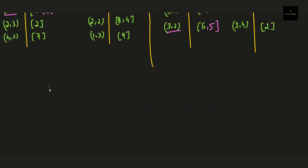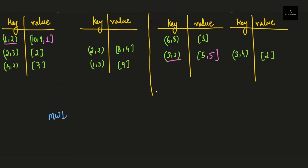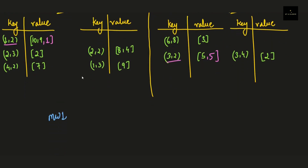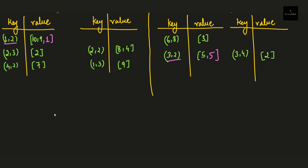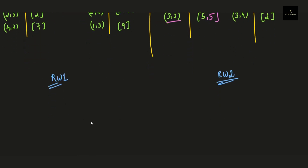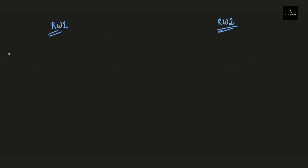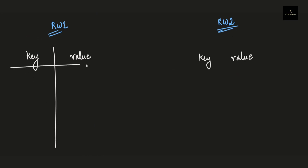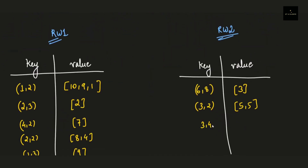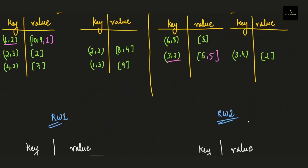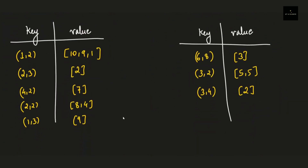In the next step we club the two key-value tables in each map worker into a single key-value table. Note that the swapping task is done with the help of reducer workers — the map workers get converted into reducer workers, which swap, reduce the data, and produce the final result. So the two key-value tables associated with each reducer worker get clubbed into a single key-value table with all records combined.